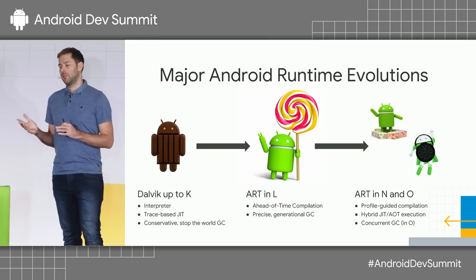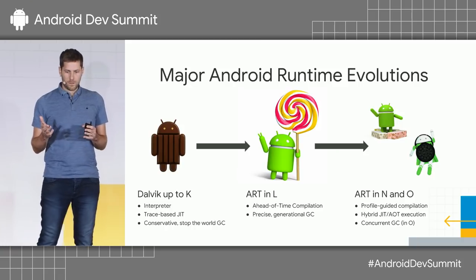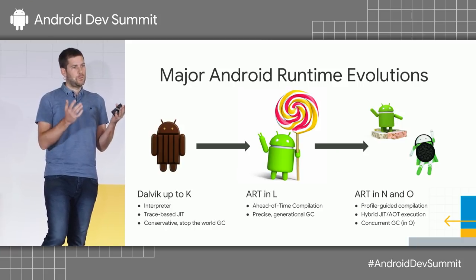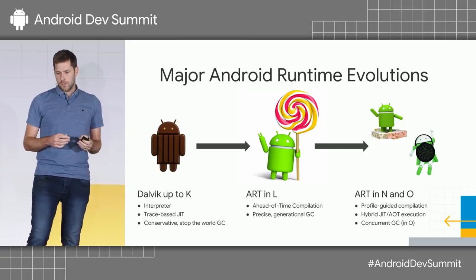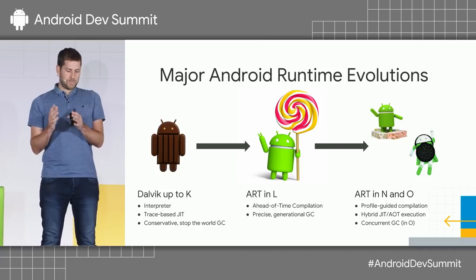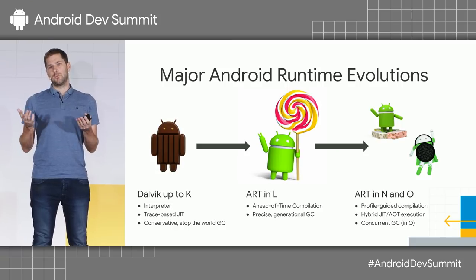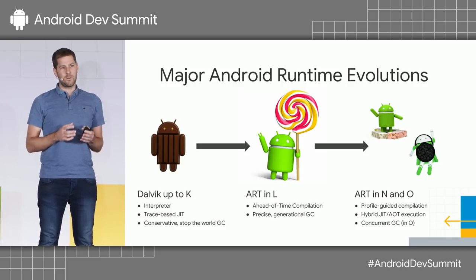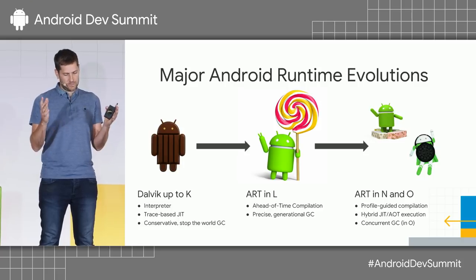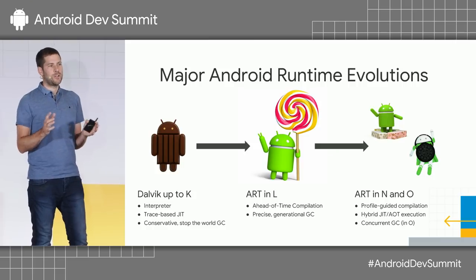Essentially, there's been three incarnations of the Android runtime. The first one was Dalvik — it was the first implementation that shipped with Android. Dalvik's main focus was: how do we save RAM? The reason being, back in the day — like 10 years ago — the RAM we had on the phones we were shipping was even less than 200 megabytes, and that was very little if you want to execute the whole Android stack.